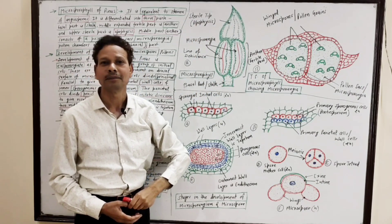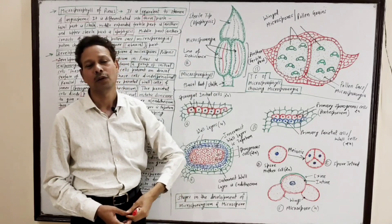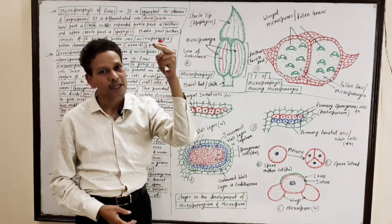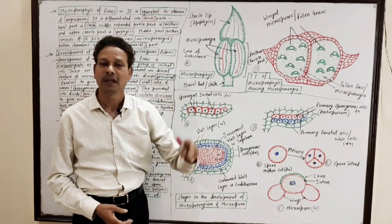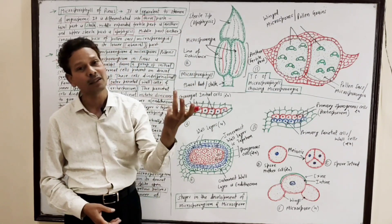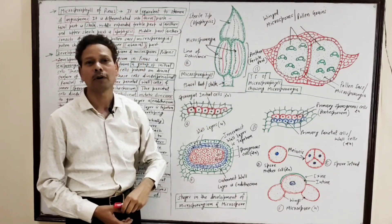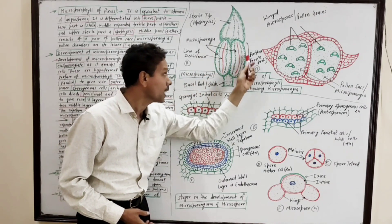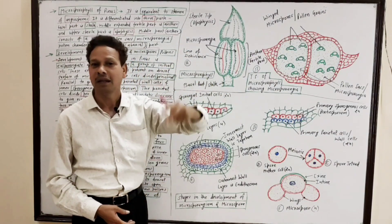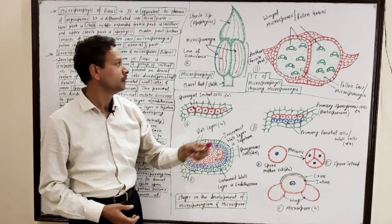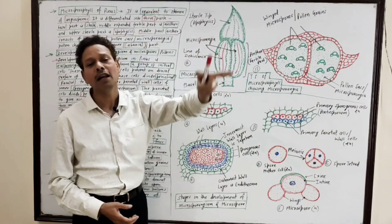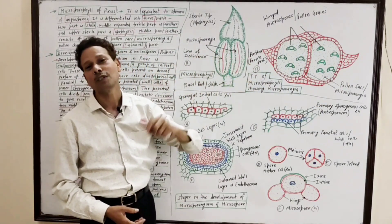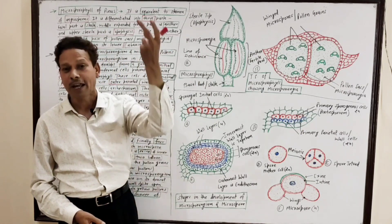This microsporophyll is differentiated into three parts, while in the case of angiosperms the stamen is differentiated into two parts: the small lower stalk-like structure called the filament, and the upper fertile bi-lobed structure called the anther. In microsporophyll, the three parts are: the lower small stalk (basal part), the middle expanded fertile part having two microsporangia like two anther lobes, and the upper sterile part called apophysis. This is the transverse section of microsporophyll, which is equivalent to the stamen of angiosperms.